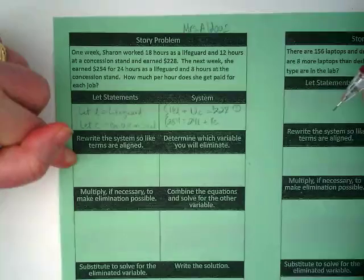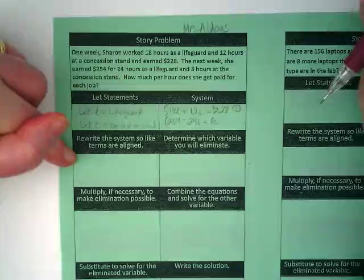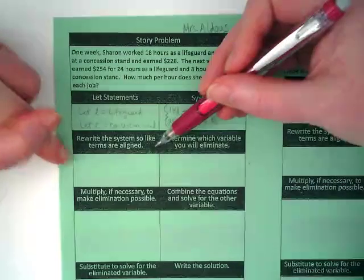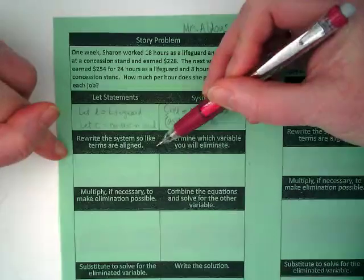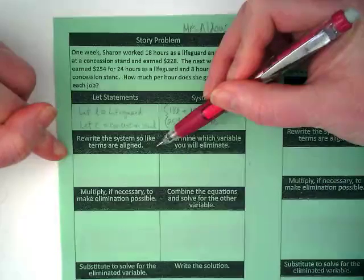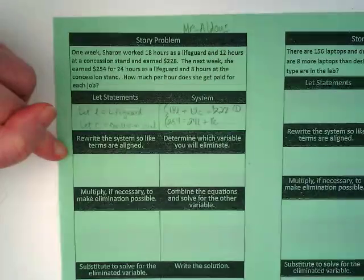Here's what our graphic organizer is letting us know is the next step in solving system word problems. Today, we're using elimination. We need to rewrite the system so the terms are aligned.